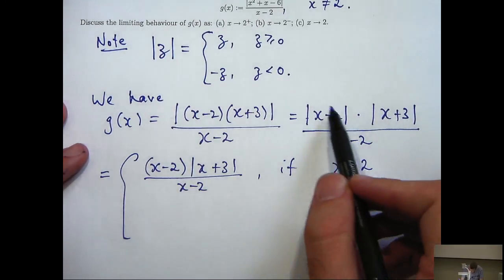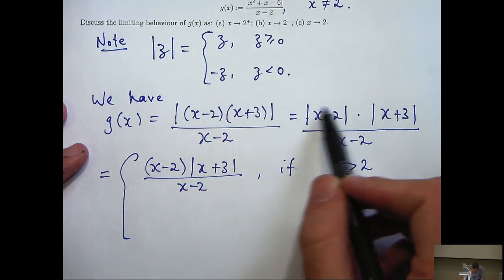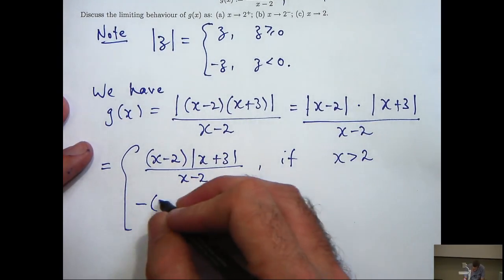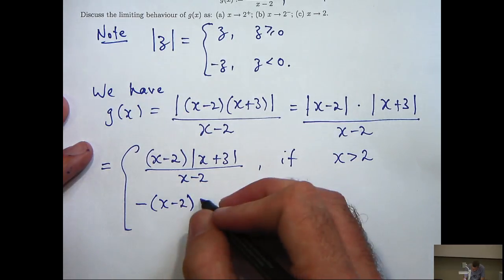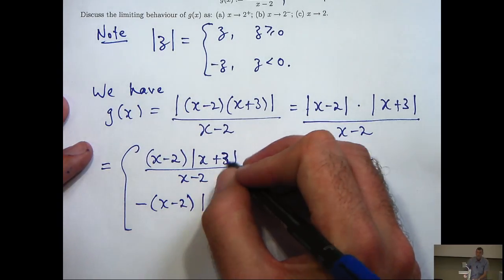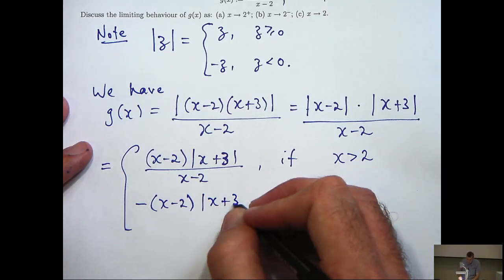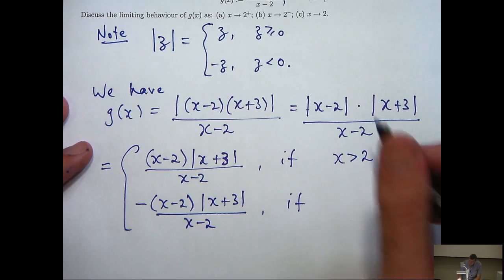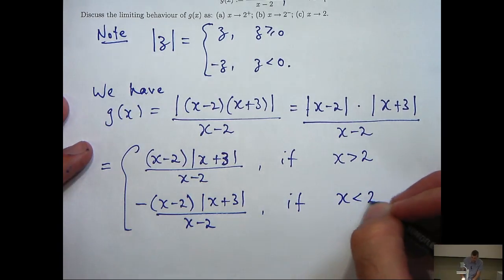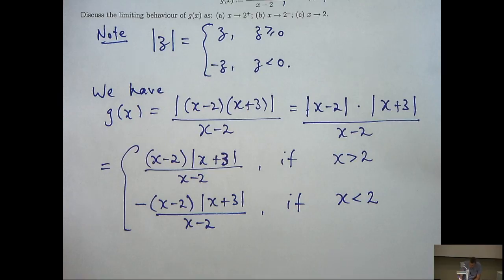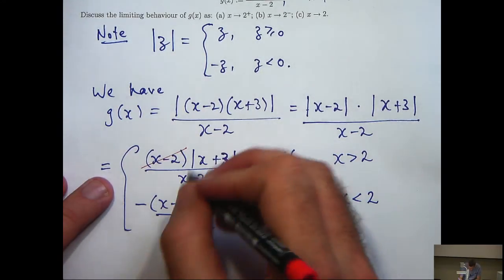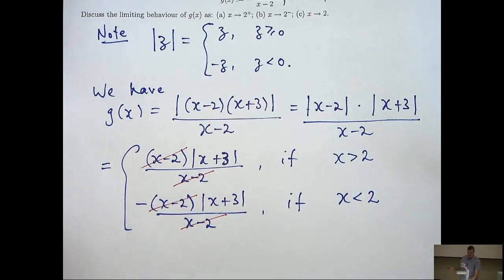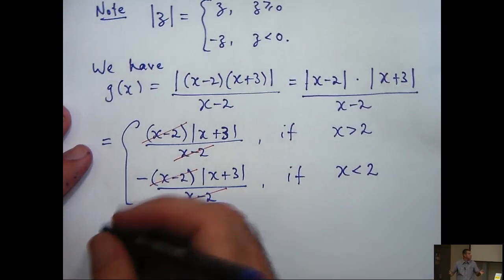And again by definition, if x minus 2 is negative, then all I do is I remove the absolute signs and put a minus out the front. So that's a 3 there. Now x minus 2 is negative when x is strictly less than 2. So now what I see is, oh great, I can cancel some of these off and I can write my g(x) very compactly and simply.